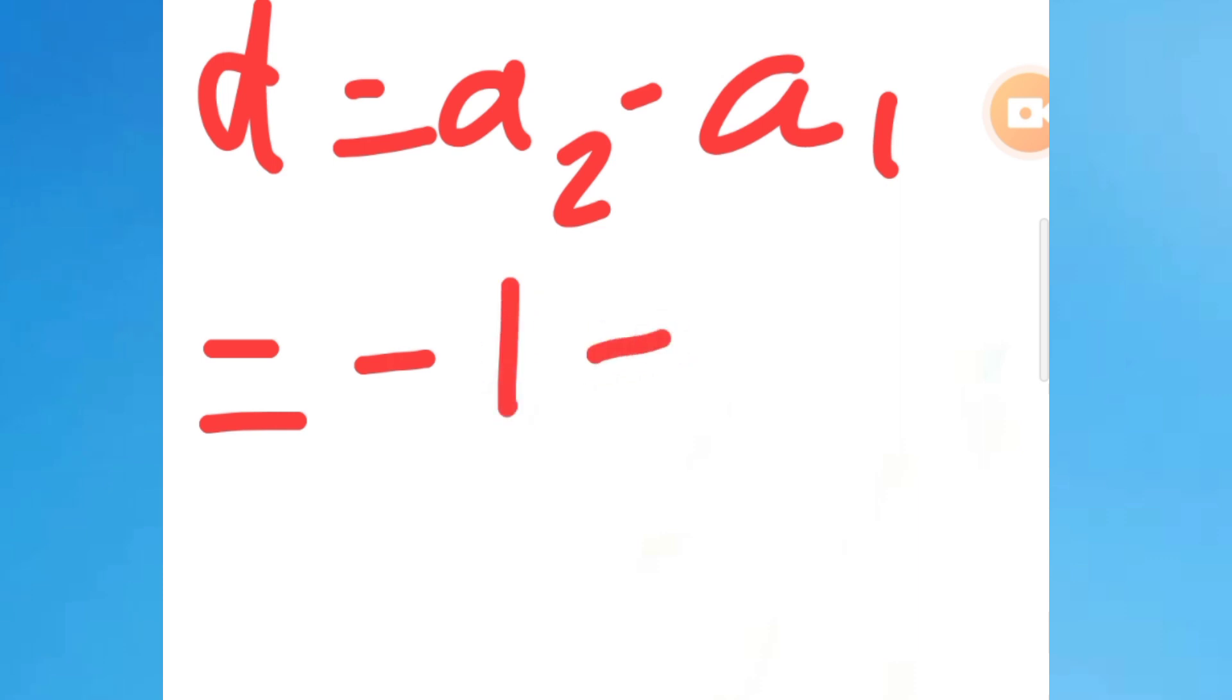The common difference will be d = a₂ - a₁. Therefore a₂ is -1 minus a₁ which is 3. So the answer will be -1 - 3 = -4. The common difference is -4, so we need to choose the -4 option.